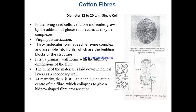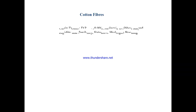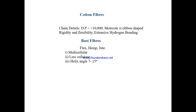The diameter of cotton fiber is 12–20 micrometers. It is a single cell or unicellular fiber. The structure of the cotton fiber is described as a helical ribbon-shaped reversal spiral — the direction of the spiral reverses between the primary and secondary cell walls. The helix angle is 30 degrees and 67% crystallinity is present. Cotton fiber has a degree of polymerization greater than 10,000, a ribbon-shaped molecule, with rigidity, flexibility, and extensive hydrogen bonding.